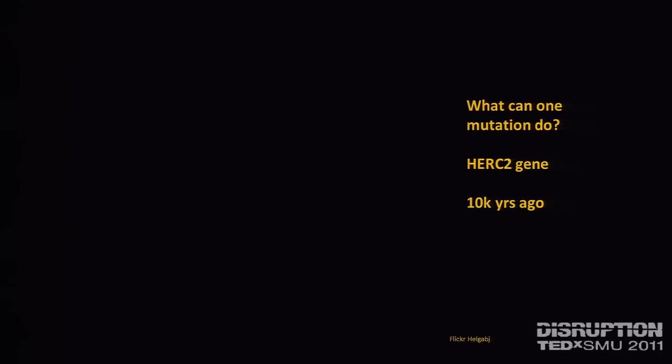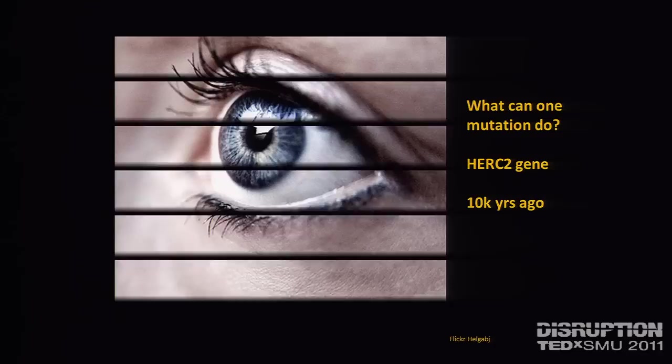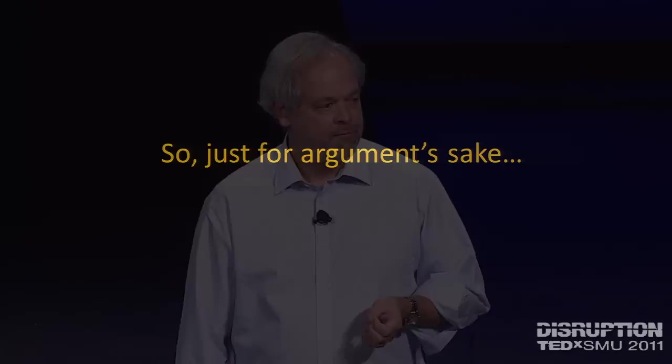We keep mutating. About 10,000 years ago, we had a mutation in the Herc2 gene which some people found attractive — and that's why you've got blue eyes. That has spread in the last 10,000 years. So we keep evolving, we keep changing, we keep upgrading.